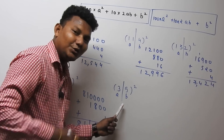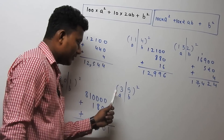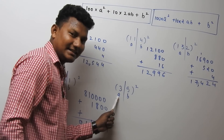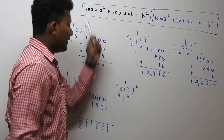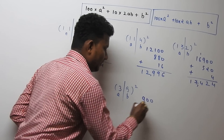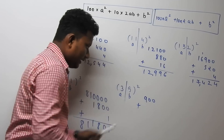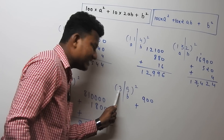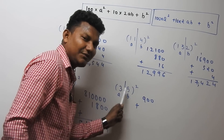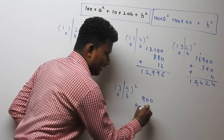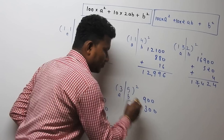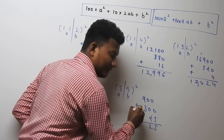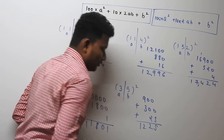Let's try a 2-digit number to see the same concept: 35². Here a = 3 and b = 5. So 3² = 9, and 9 × 100 = 900. Then 2ab = 2 × 3 × 5 = 30, and 30 × 10 = 300. And 5² = 25. Adding: 900 + 300 + 25 = 1225. So the square of 35 is 1225.